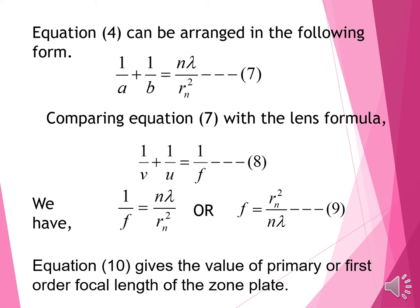Considering the equation and rearranging: 1 over A plus 1 over B equals N lambda over RN squared. Comparing this with the lens formula — 1 over v plus 1 over u equals 1 over F — we get 1 over F equals N lambda over RN squared, or F equals RN squared divided by N lambda. The zone plate has a definite focal length given by the formula F equals RN squared over N lambda.